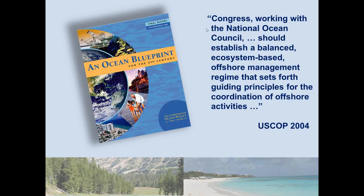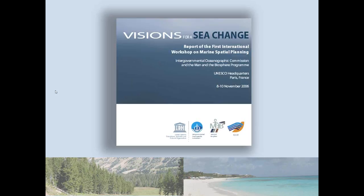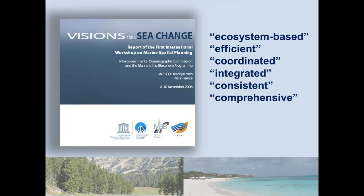Around that same time, there was growing talk about something called area-based ocean management, ocean zoning, or marine spatial planning. In 2006, two years after the commission report, there was an international workshop hosted by UNESCO on this idea. A few dozen people from around the world discussed marine spatial planning — what it is, how it might work. The report from that workshop said marine spatial planning would be ecosystem-based, efficient, coordinated, integrated, consistent, and comprehensive.